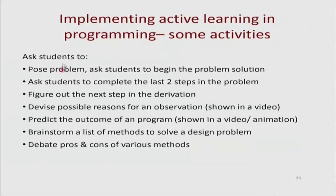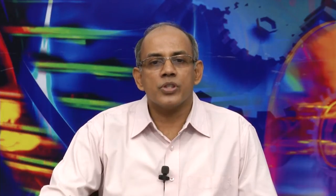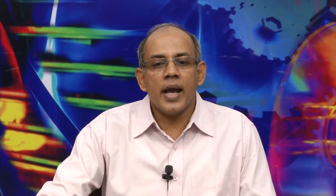Here are some strategies to implement active learning in programming. We will do more in following sessions. One strategy: pose a problem and ask students to begin the problem solution — for example, given an array, find a mechanism to sort it in increasing order. Students will start proposing approaches: some will come up with selection sort, others with a different algorithm. Based on their responses, you can keep students engaged as you proceed. Another strategy: ask students to complete the last two steps in the problem — describe a technique at pseudo-code level, then ask students to write the final code to make it work.